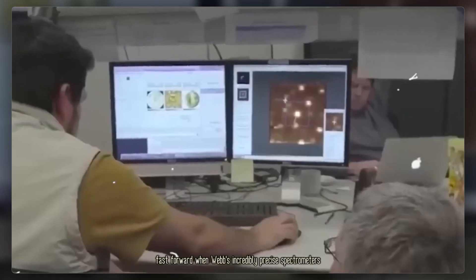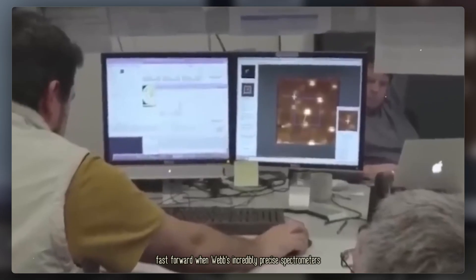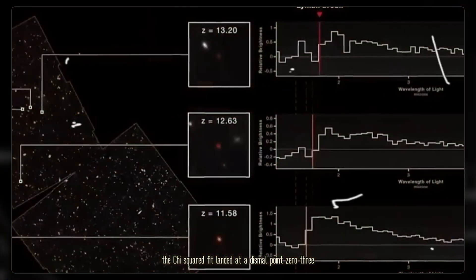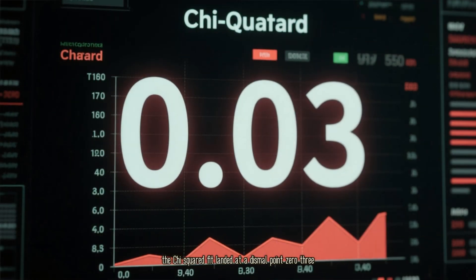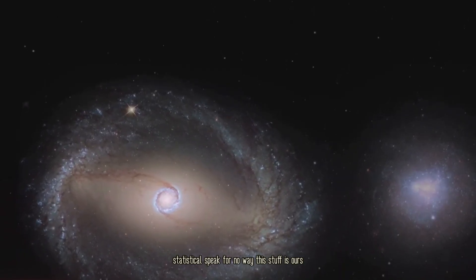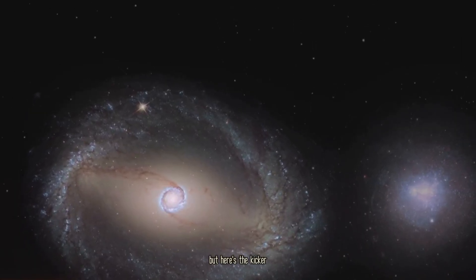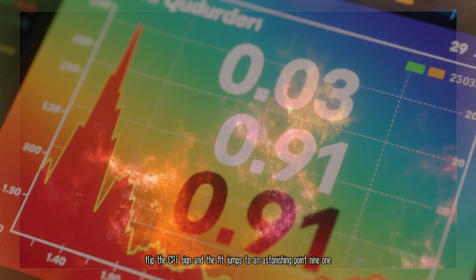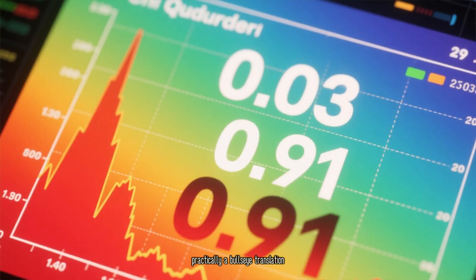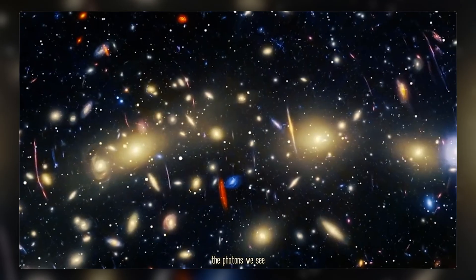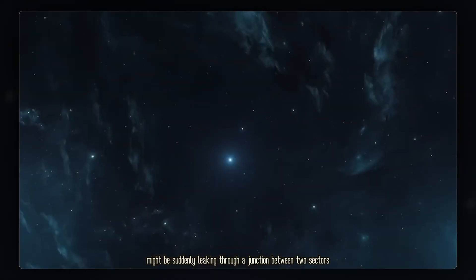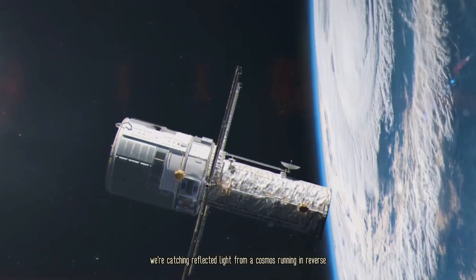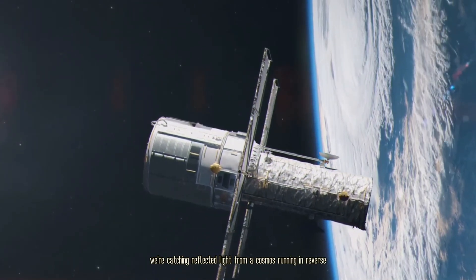Fast forward, when Webb's incredibly precise spectrometers fed Object X into the standard model, the chi-squared fit landed at a dismal 0.03. Statistical speak for, no way this stuff is ours. But here's the kicker. Flip the CPT sign, and the fit jumps to an astonishing 0.91. Practically a bullseye. Translation, the photons we see might be subtly leaking through a junction between two sectors of space-time. If so, we're catching reflected light from a cosmos running in reverse.